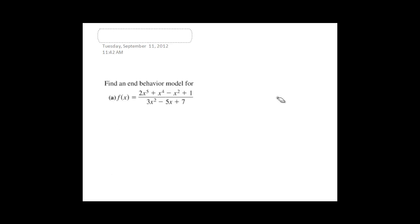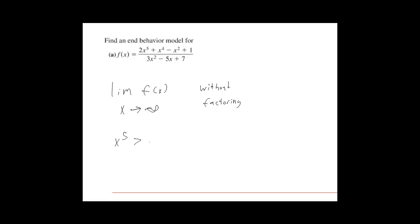Okay, so this is how we find end behavior models, basically limits as x approaches infinity of polynomial functions. We can do this without factoring. All you have to do is look at your leading terms. We know that x to the fifth climbs way faster than x squared, especially for positive x values.